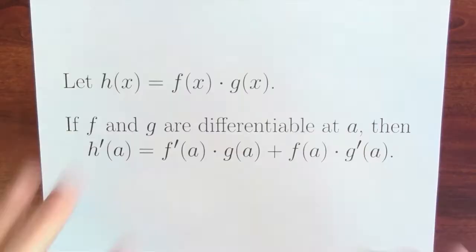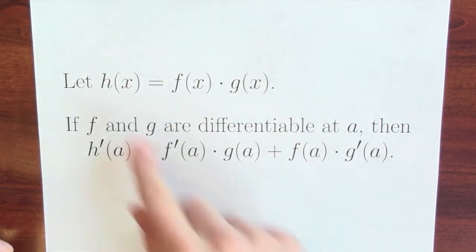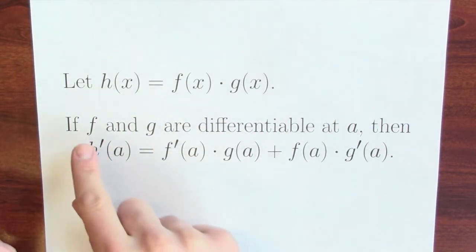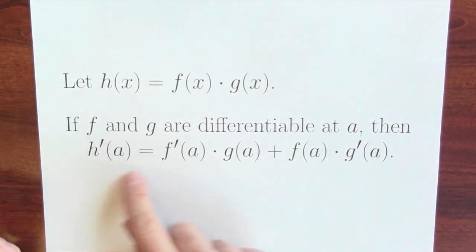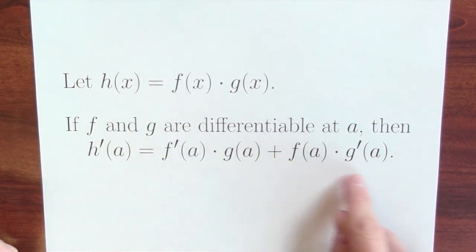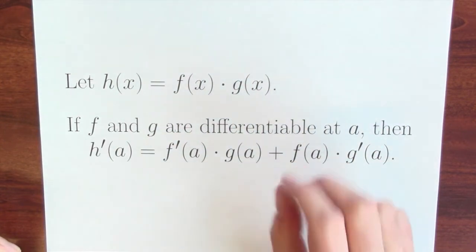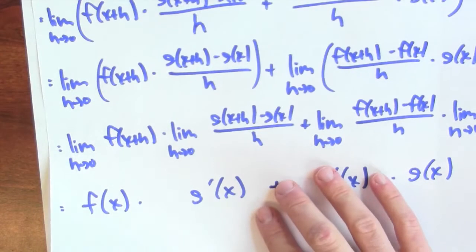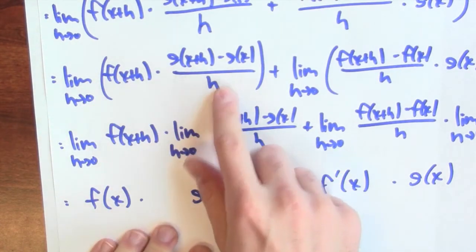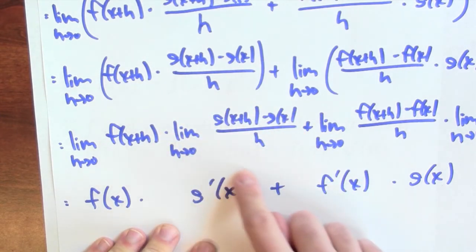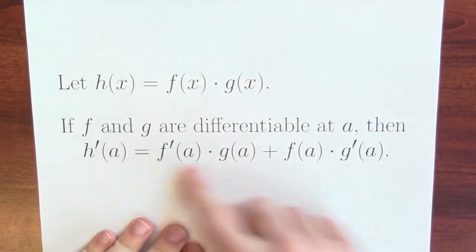Here's a precise statement of the product rule. Defining h(x) = f(x)·g(x): if f and g are differentiable at some point a, then the derivative of their product is f'(a)·g(a) + f(a)·g'(a). You can really see where the differentiability condition is necessary — at the step where we go from a limit of a product to a product of limits, we need the limit of [g(x+h) minus g(x)]/h to exist, which is exactly computing the derivative of g. That's where these conditions play a crucial role in the proof.